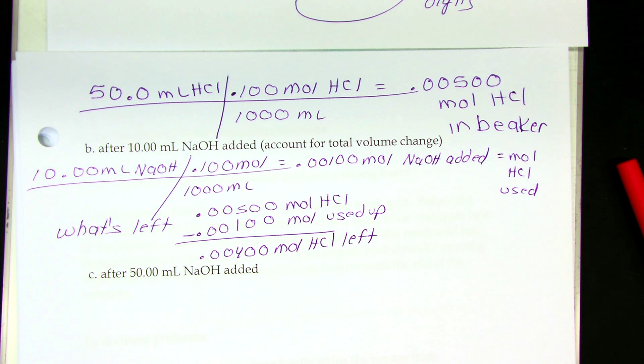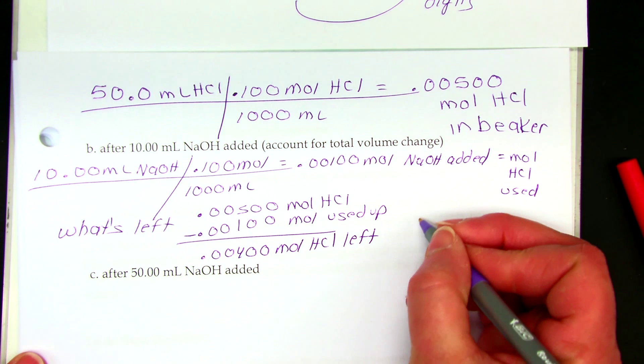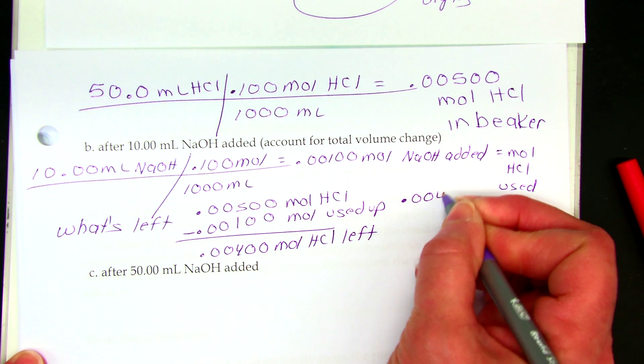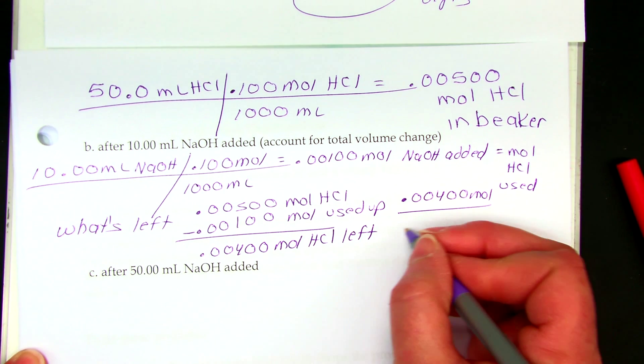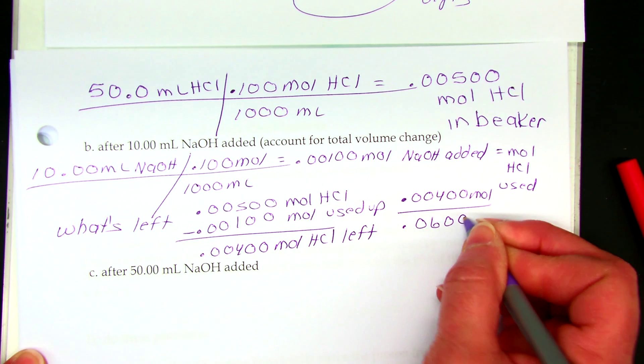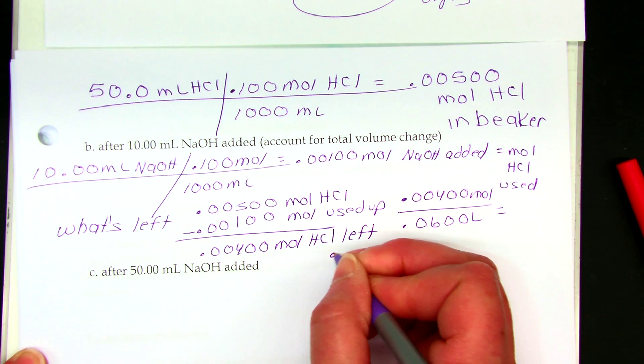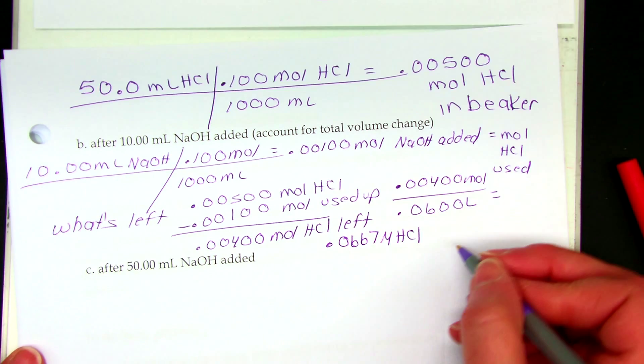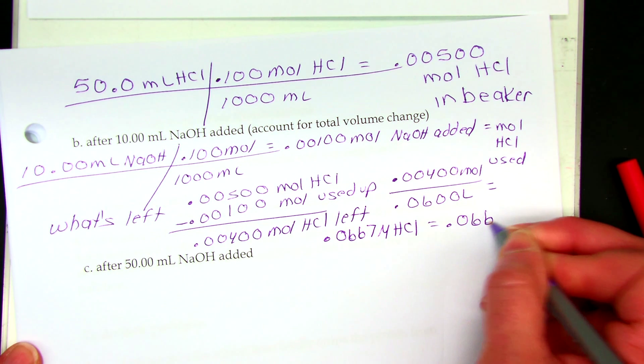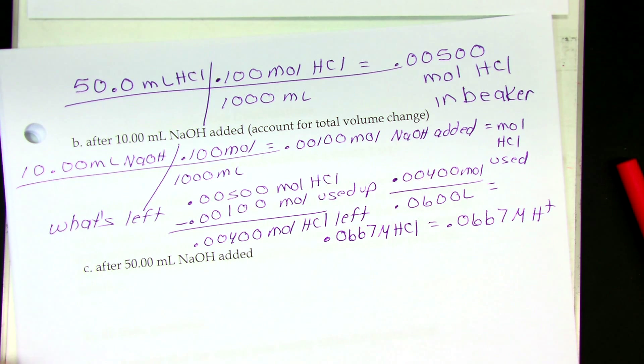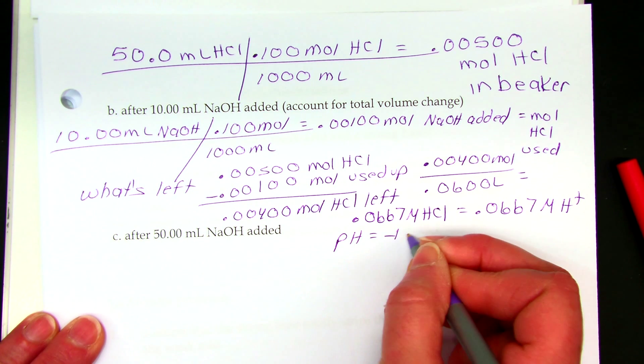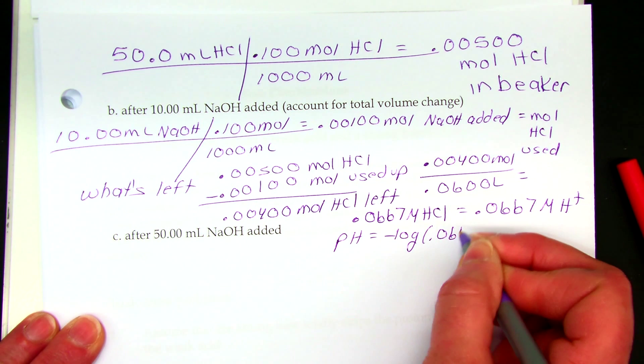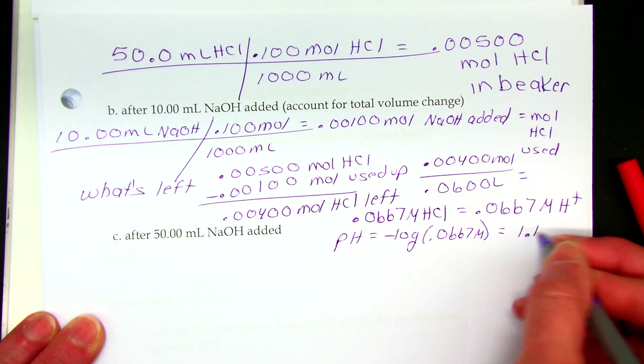Now, what's the concentration? Because I have changed the volume. You have to divide by the total volume. So I have 0.004 moles divided by my new volume, 60 milliliters, 0.0600 liters is 0.0667 molar HCl. That's what's left in my beaker. And that's equal to 0.0667 molar hydrogen ion because the HCl breaks apart completely. So when I look at this now, my pH is minus the log of 0.0667 molar. So it's equal to 1.176.